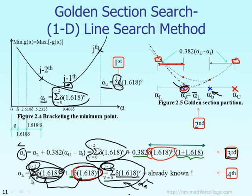It's already known. Instead of calculating two points, you only have to calculate one more point, which is alpha B. That is the idea.